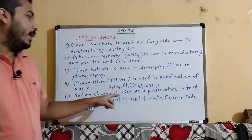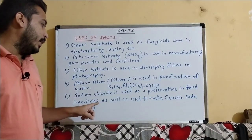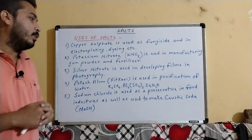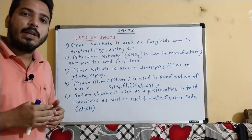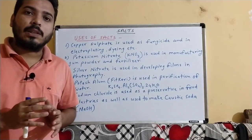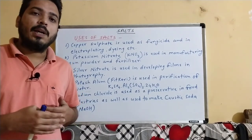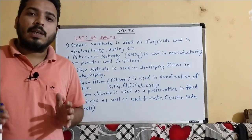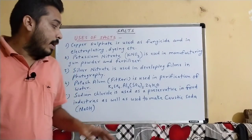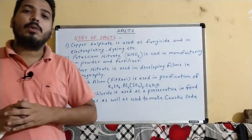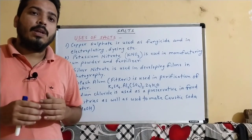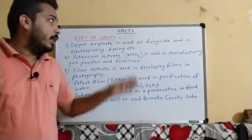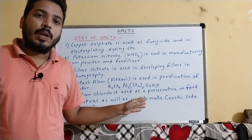Next, sodium chloride is used as a preservative in food industries, as well as used to make caustic soda (NaOH). These are all the uses of salt. You can take a screenshot.